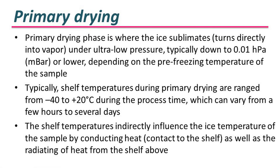Let's see what primary drying is. It is the phase where the ice sublimates under ultra-low pressure, typically down to 0.01 Pascal or lower, depending on the previous temperature of the sample. Shelf temperatures during primary drying typically range from minus 40 to plus 20 Celsius during the process time, which can vary from a few hours to several days. The shelf temperature indirectly influences the ice temperature of the sample by conducting heat as well as radiating heat from the shelf above.